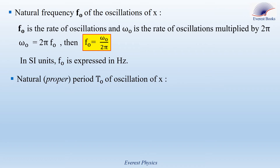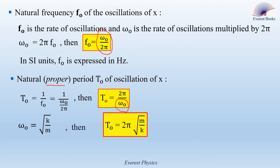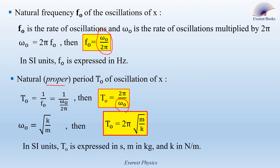Now let's move to the natural period T0 of oscillations, called in some references the proper period. T0 equals one over f0. Replacing f0 by omega 0 over two pi gives T0 equals two pi over omega 0. Since omega 0 equals the square root of k over m, we get T0 equals two pi times the square root of m over k. In SI units, T0 is in seconds, mass in kilograms, and the spring constant in newtons per meter.